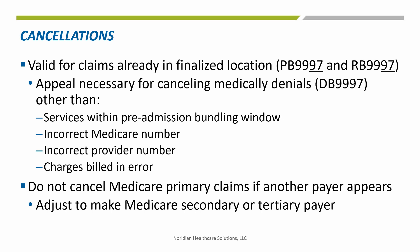Claim cancels are performed when a previously processed claim needs to be voided and any payment for the service is retracted. Cancels are commonly done when the original claim was submitted under an incorrect Medicare ID or MPI/provider number, or when outpatient charges need to be bundled with an inpatient claim. Never cancel a claim that Medicare has paid as primary if another payer is identified; these should be handled as adjustments to make Medicare the secondary payer instead.